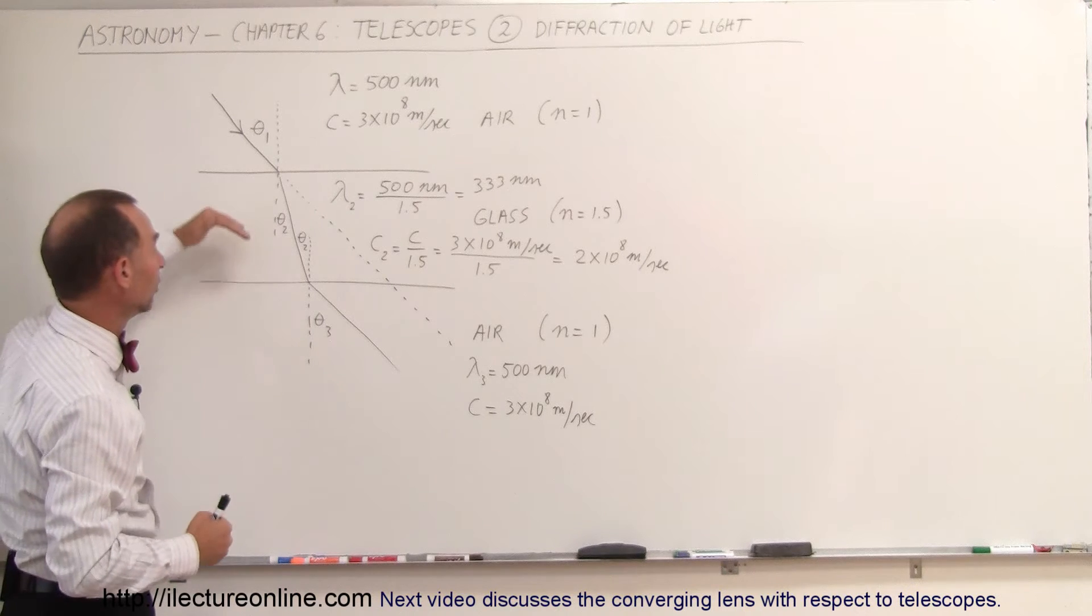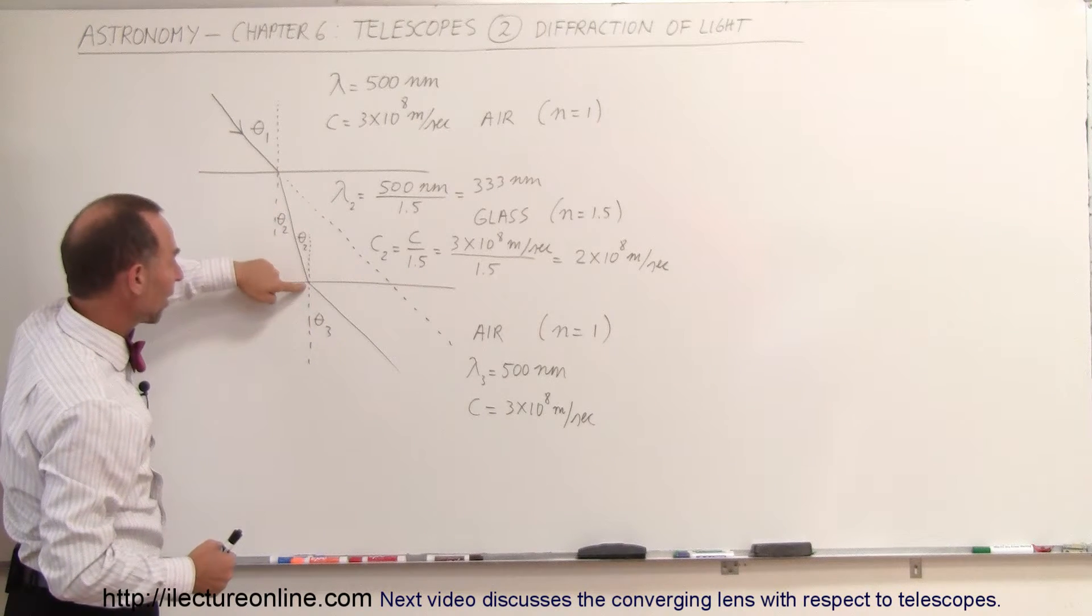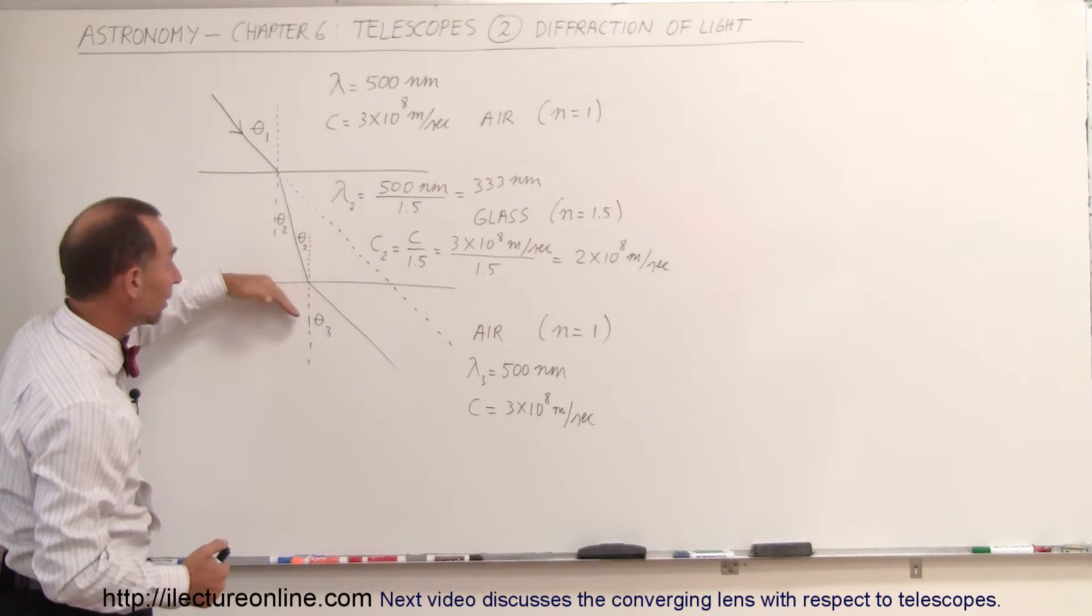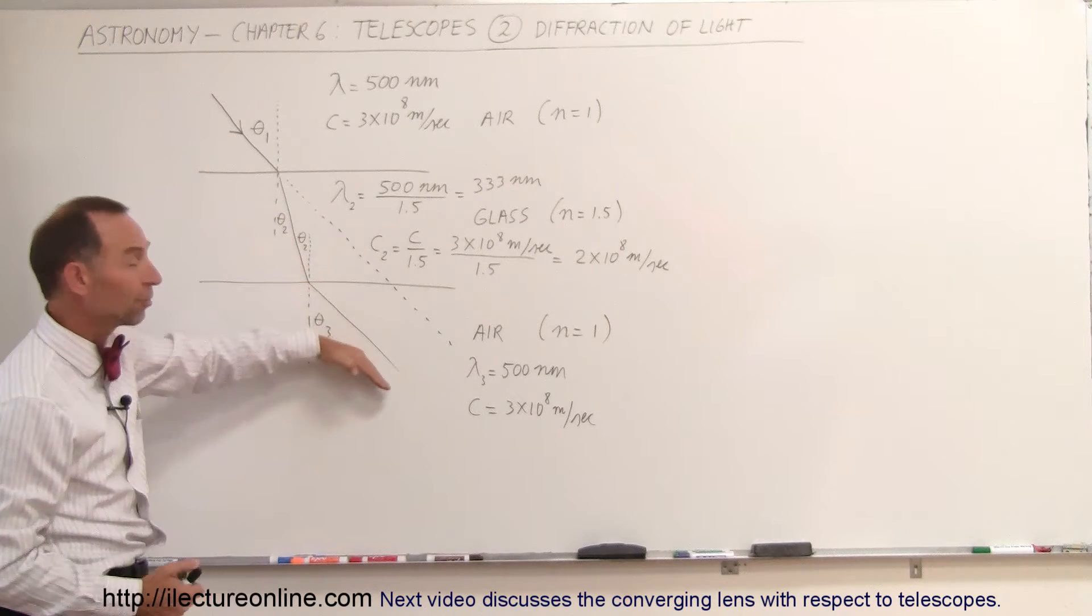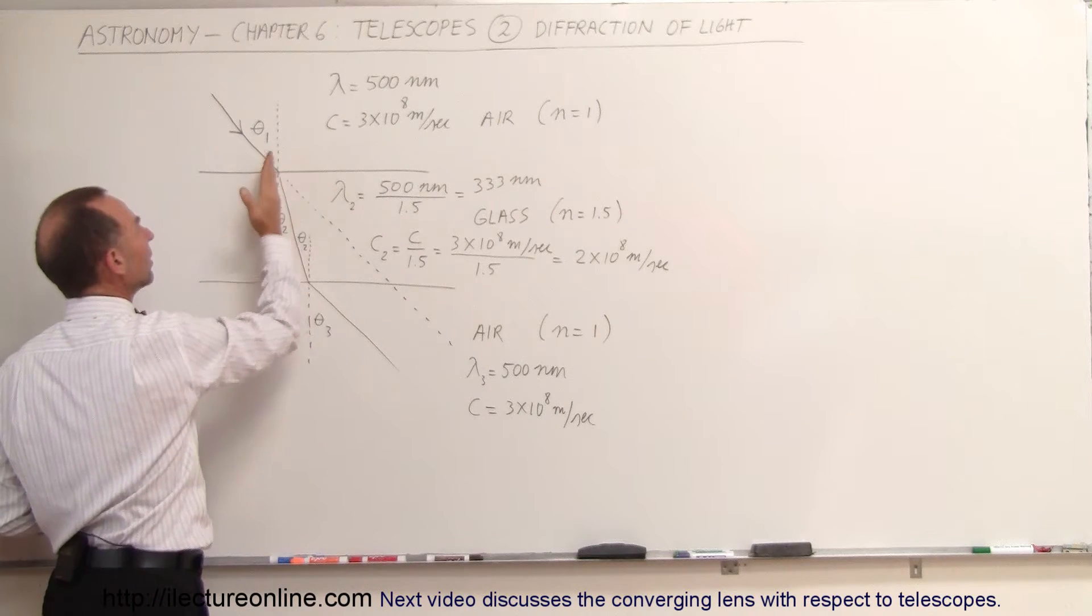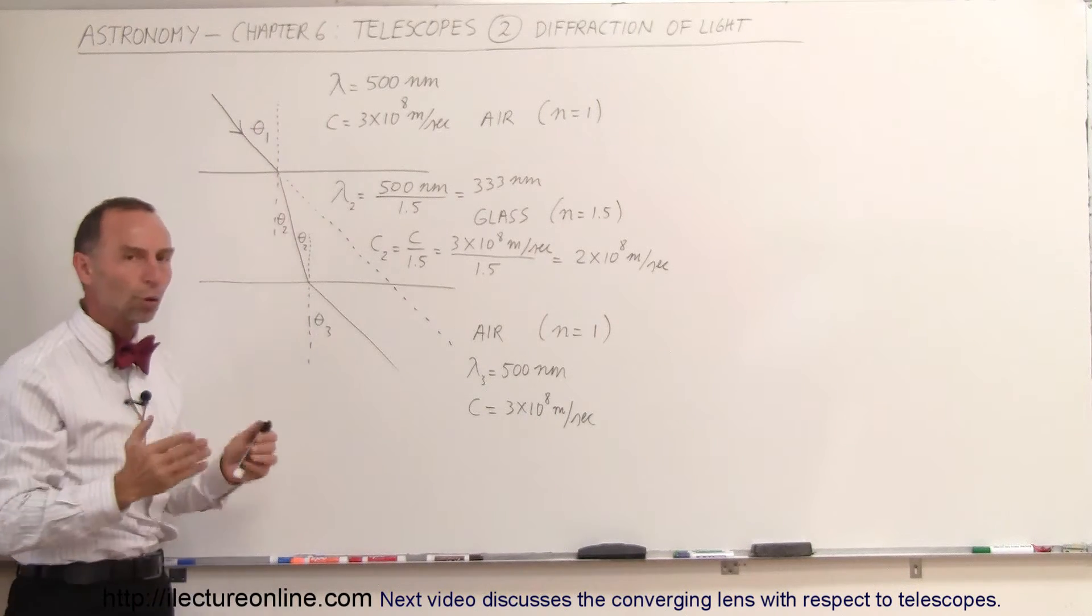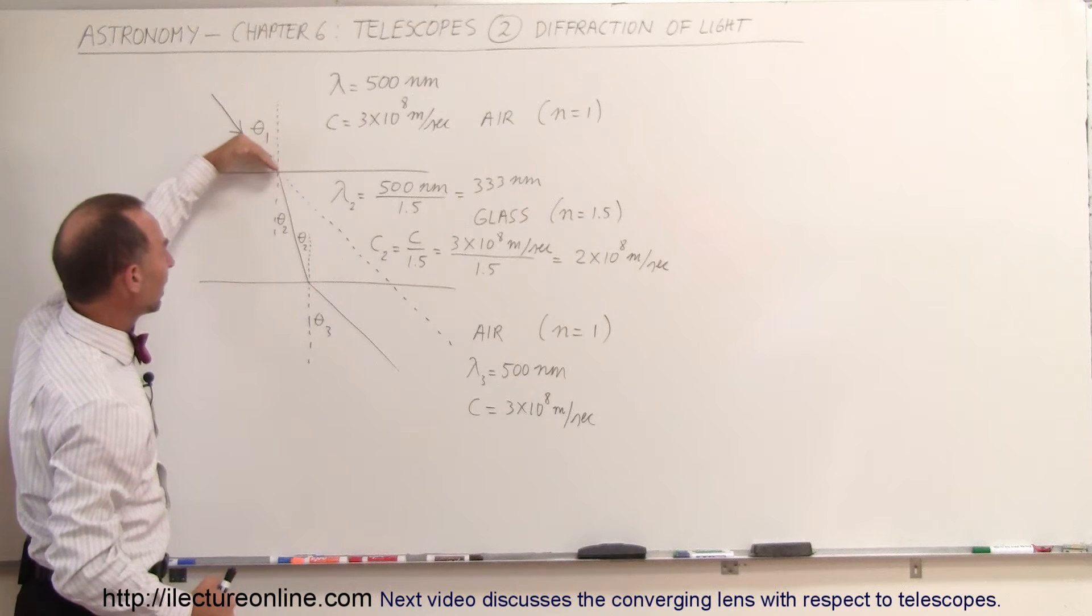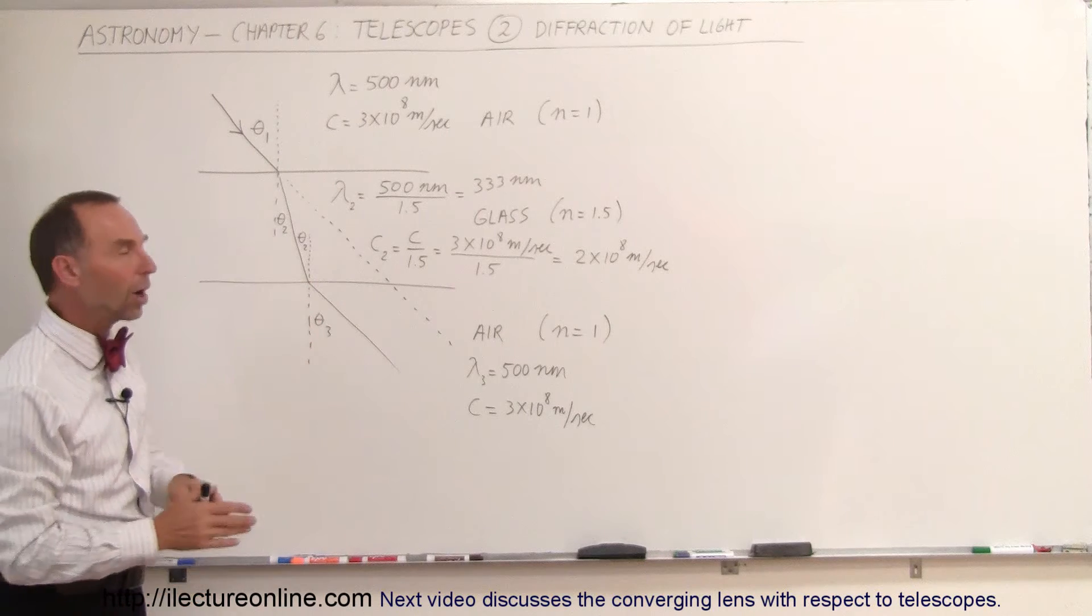That's what we call refraction. And then when it reaches the other side of the glass and exits the glass and goes back into the air layer underneath it, then again it bends in the opposite direction. So here we can see that we have a line drawn across the boundary and this line is perpendicular or normal to the boundary. And you can see that when it enters the glass it bends towards the normal as we call it.